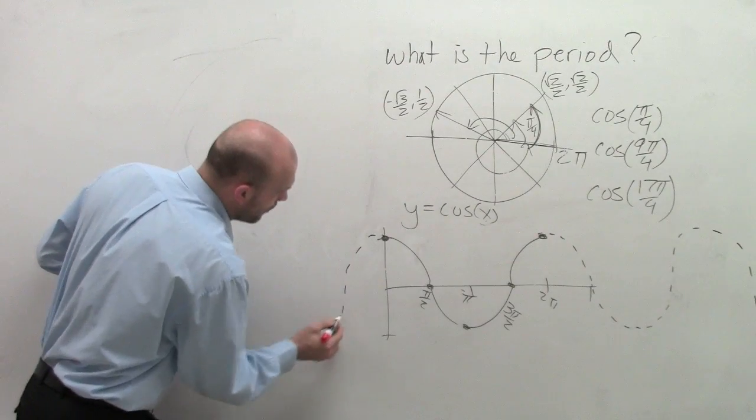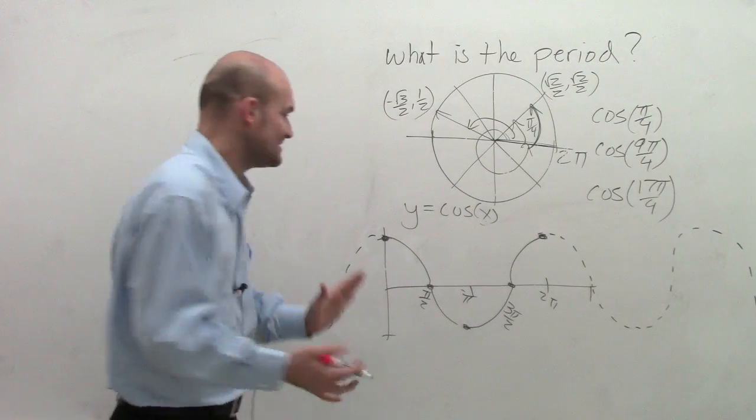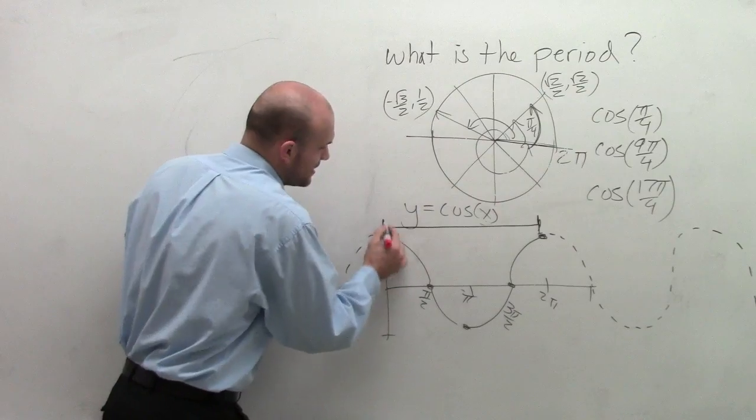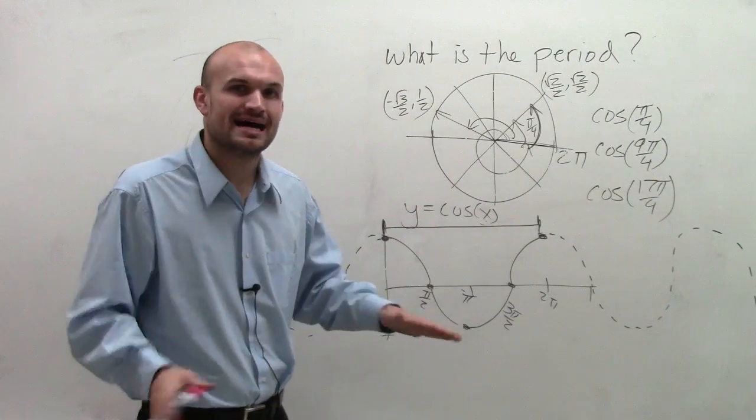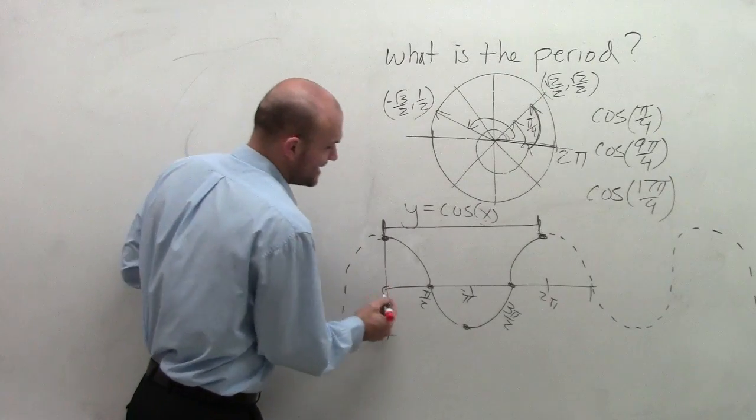So what I'm asking is, what is the period? What is the distance that a graph takes before it starts repeating itself? So for sine and cosine, that distance is 2 pi.